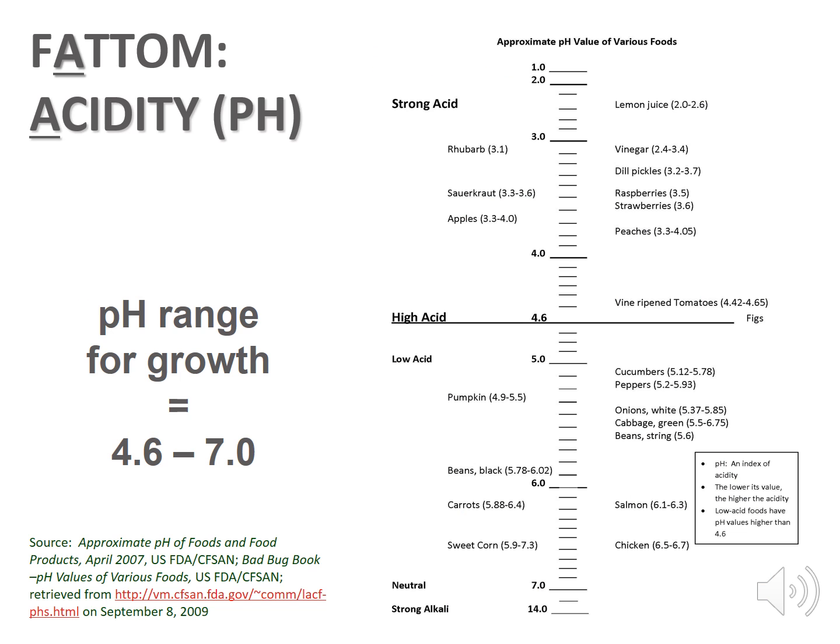A is for acidity. pH is an index of acidity. Values on the pH scale range from 0 to 14 — the lower its value, the higher the acidity. Low acid food with a pH higher than 4.6 needs to be pressure canned to destroy Clostridium botulinum spores so that they will not grow and produce the deadly toxin.